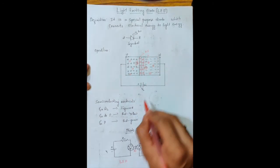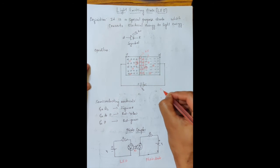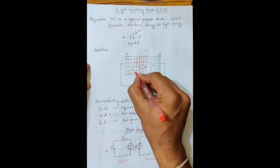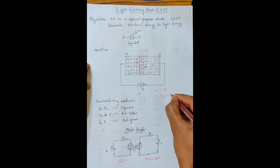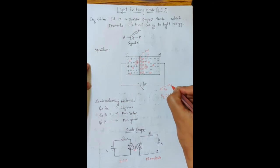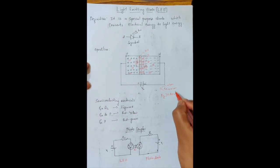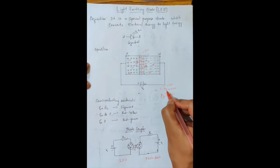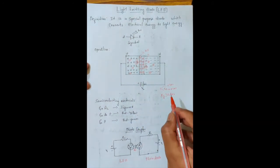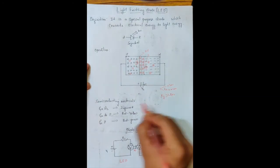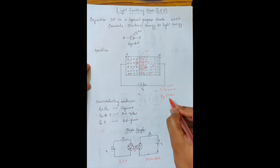However, the emitted light will not be visible to the naked eye for normal semiconducting materials like silicon and germanium. To see the emitted light, the energy gap of the semiconducting material used should be greater than 1.8 electron volts. Silicon has an energy gap of 0.7 eV and germanium 0.3 eV, both less than 1.8 eV, so the emitted light after recombination cannot be seen with the naked eye when using silicon or germanium.